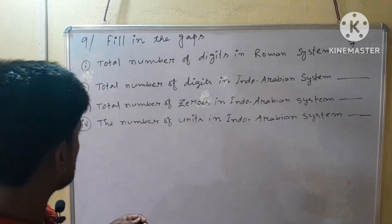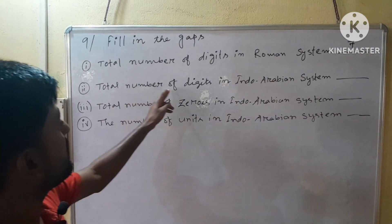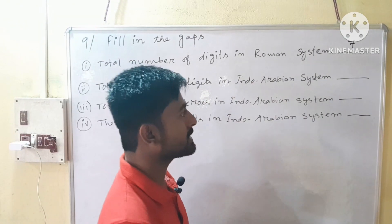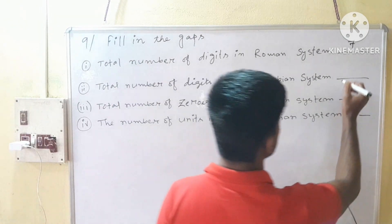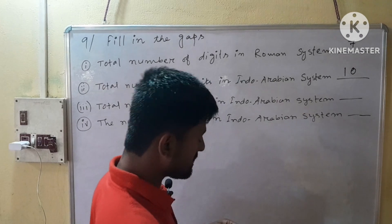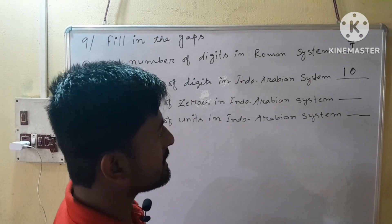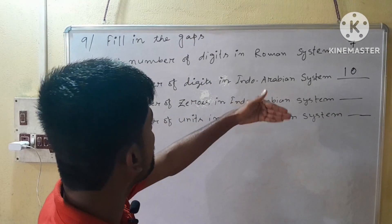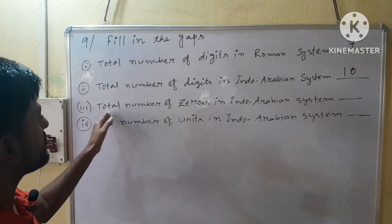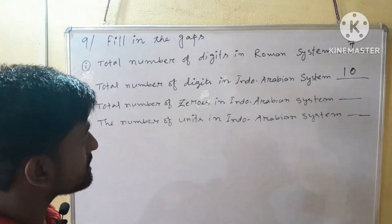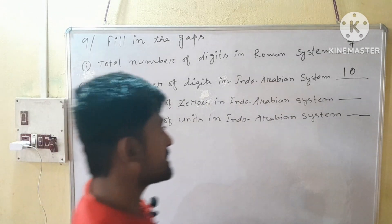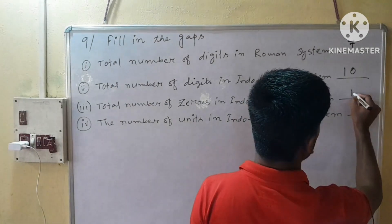Next: total number of digits in the Indo-Arabian system is 10. These are 0 to 9 — that is 0, 1, 2, 3, 4, 5, 6, 7, 8, and 9. Number 3: total number of zeros in the Indo-Arabian system — the number of zeros is 1.